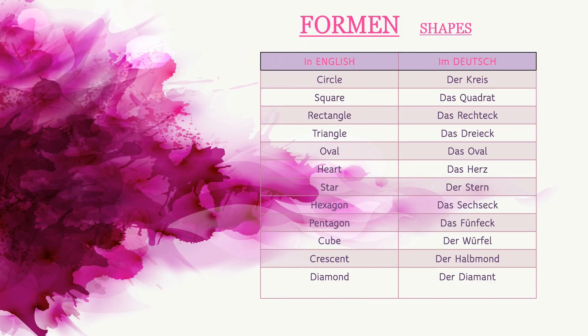Now let's learn the shapes in German. Formen. Circle — Kreis. Square — Das Quadrat. Rectangle — Das Rechteck. Triangle — Das Dreieck. Oval — Das Oval.